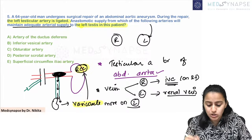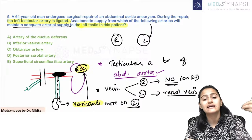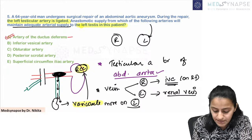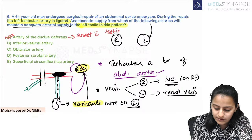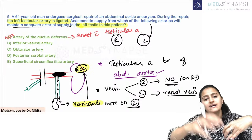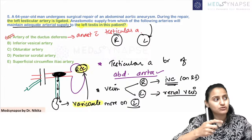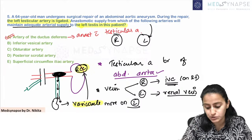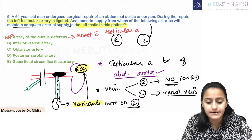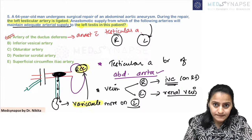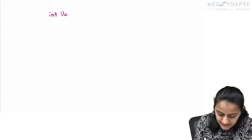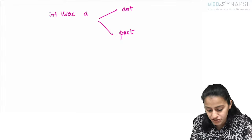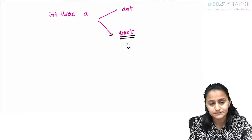So the question: if the left testicular artery is ligated, what will maintain blood supply to the testes? It is the artery of the ductus deferens, because this artery anastomoses with the testicular artery. So if the testicular artery is ligated, the artery of the ductus deferens takes over and maintains blood supply to the testes. The artery of the ductus deferens is a branch of the internal iliac artery — which has an anterior division and a posterior division.